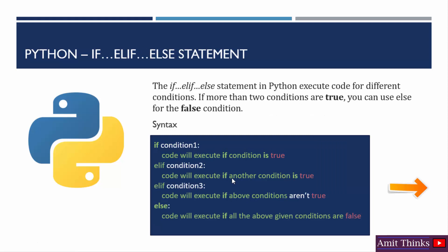Then we have the if-elif-else statement. Under if-elif-else, the code is executed for different conditions. If more than two conditions are present, we need to use else to handle the false part. For example, with marks: if the user got more than 90 out of 100, the grade is A+. Marks from 75 to 90 give grade A, 60 to 75 gives grade C, and the rest — candidates getting less than 60 — fall under the last else condition.